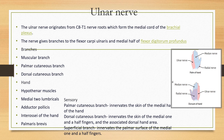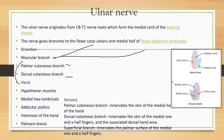The ulnar nerve originates from C8 and T1 nerve roots, which form the medial cord of the brachial plexus. It innervates two muscles in the anterior compartment of the forearm: the flexor carpi ulnaris and the medial half of the flexor digitorum profundus. It has three branches: the muscular branch, the palmar cutaneous branch, and the dorsal cutaneous branch. The muscular branch also innervates the hand muscles including the hypothenar muscles, medial two lumbricals, adductor pollicis, interossei of the hand, and palmaris brevis.